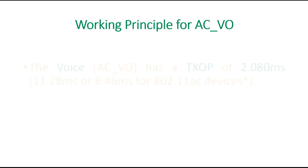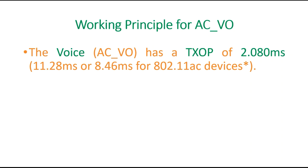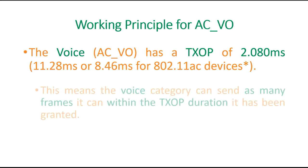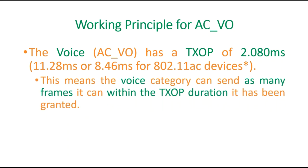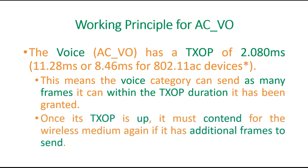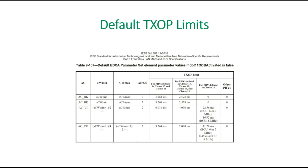In the same way, it works for voice as well — voice has a TXOP value of 2.080 milliseconds. When the voice category wins the medium, it will send as many frames as possible within that TXOP duration. If it has additional frames to send, it has to contend for the wireless medium once again. This slide is taken from the IEEE 802.11-2016 standard, where it is clearly mentioned for background, best effort, video, and voice — how much the IFS time period is and the corresponding values.